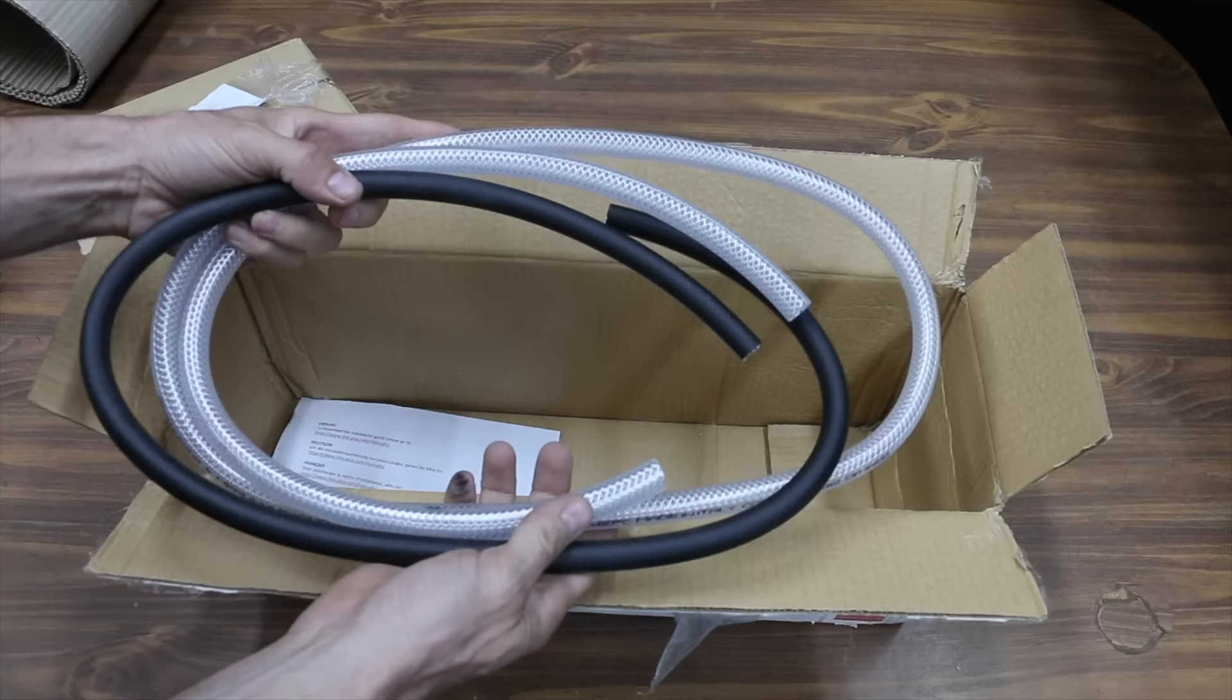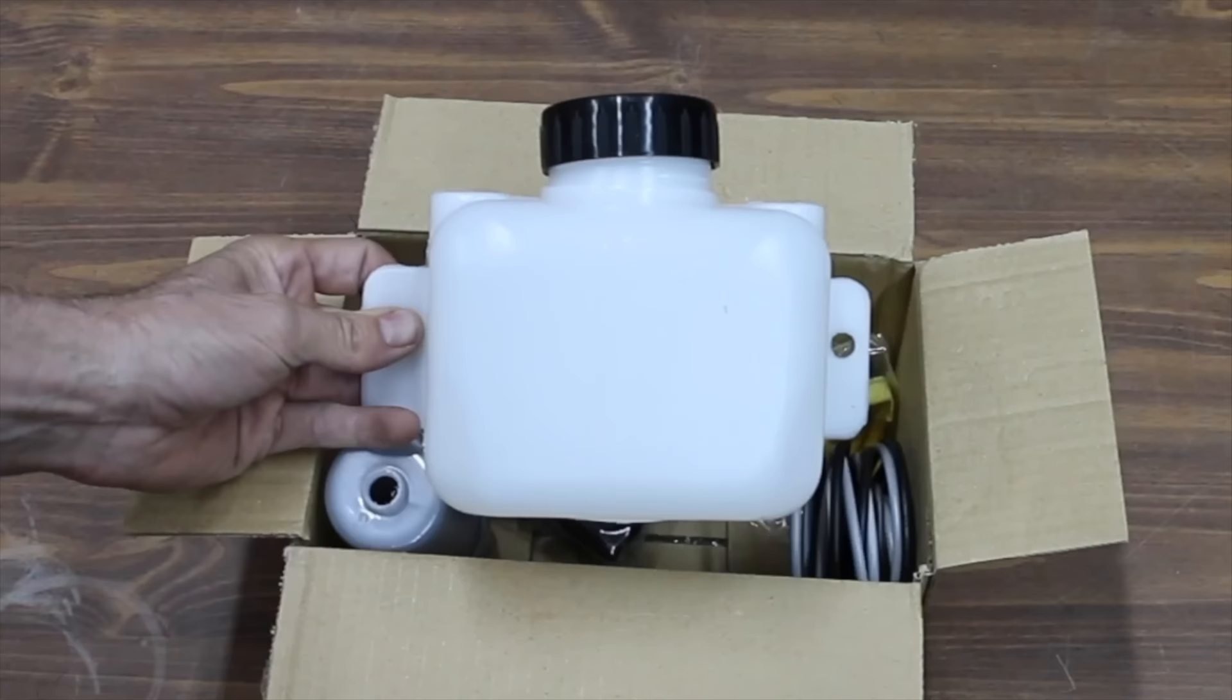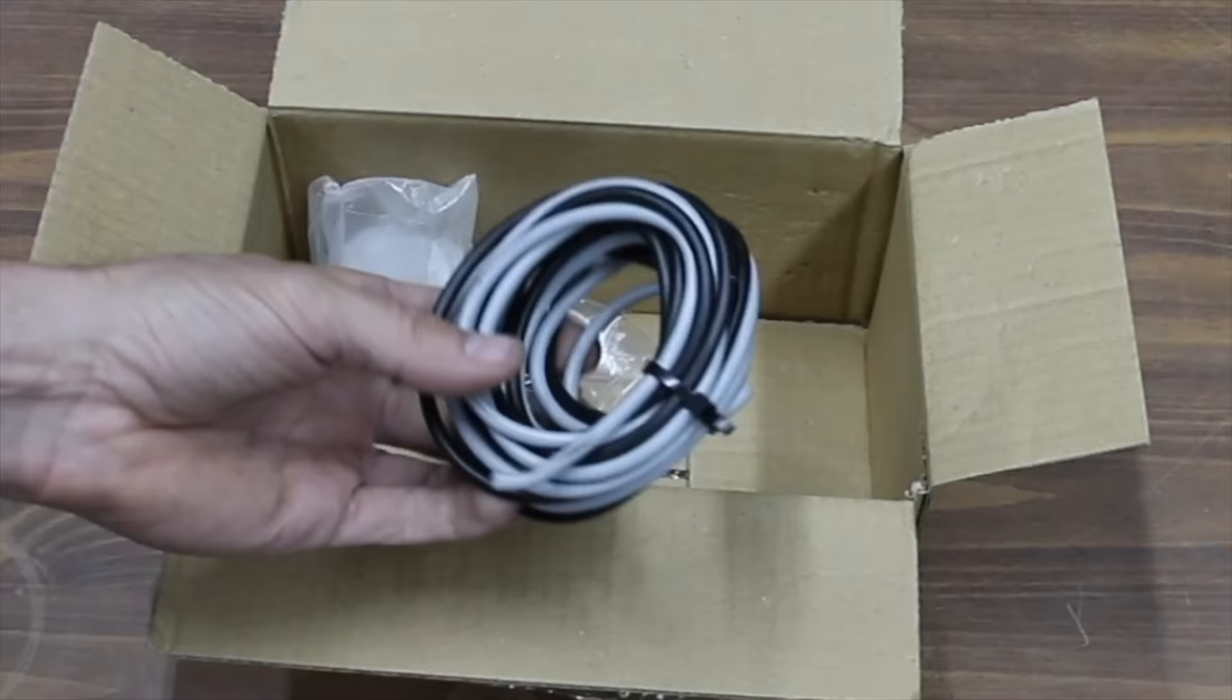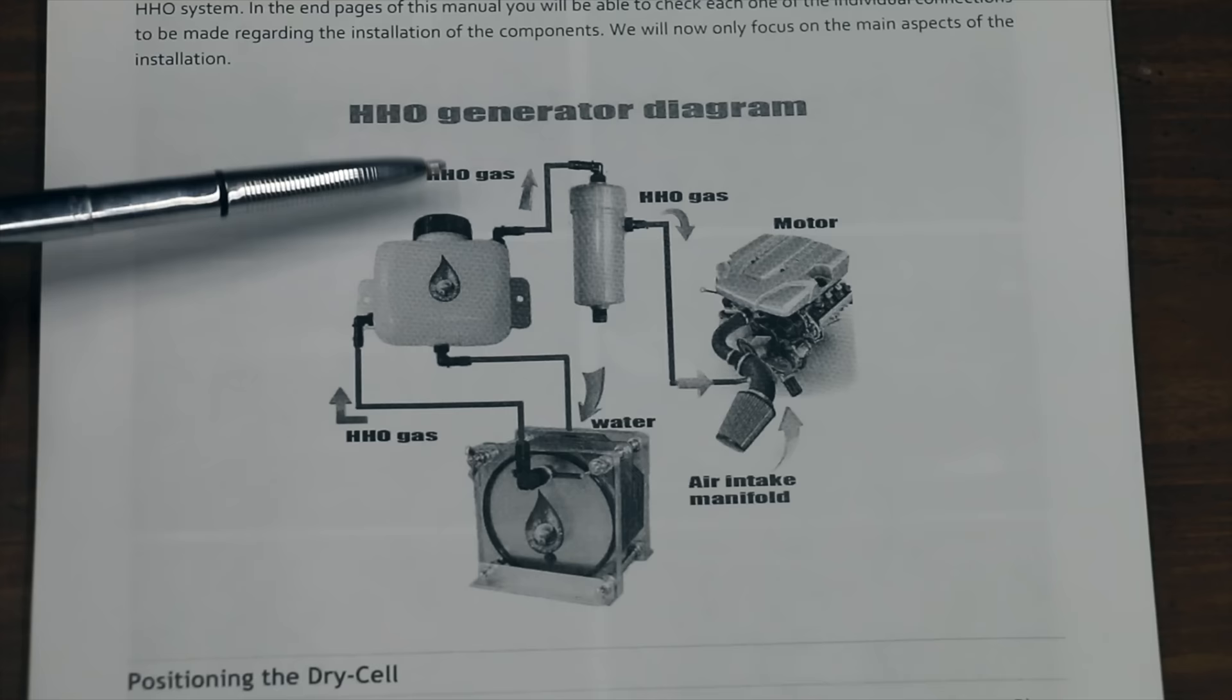The kit comes with a dry cell hydrogen generator, a couple of rubber hoses, and a holding tank for water and electrolyte solution. It also comes with a bubbler, wires, and electrical connectors. The water canister is supposed to send water to the hydrogen generator. Then the hydrogen generator makes a gas which goes back to the water canister. By the way, this gas that goes back to the canister is highly explosive. From the water container, the gas goes to the bubbler and then into the engine.